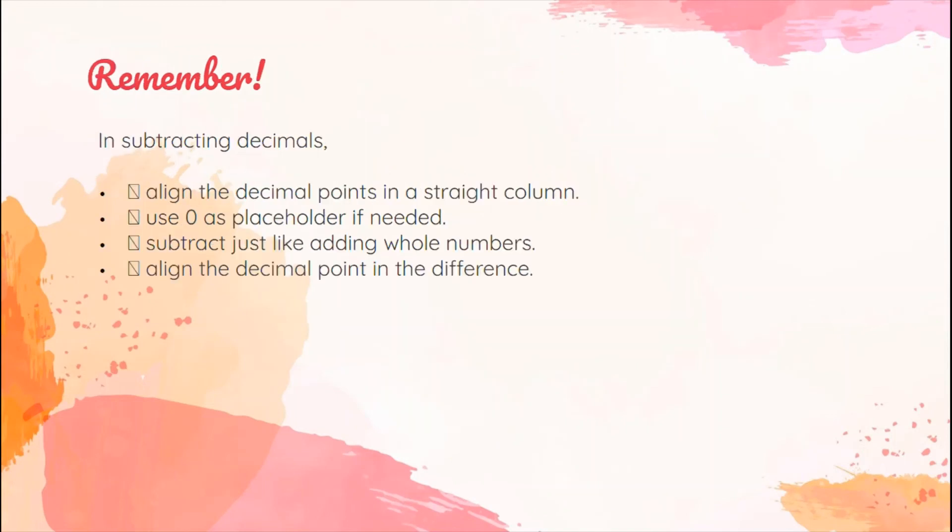Always remember that in subtracting decimals, the first thing that we need to do is to align the decimal point in a straight column. Use 0 as a placeholder if needed. Subtract like adding whole numbers. And lastly, align the decimal point in our difference.